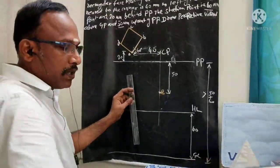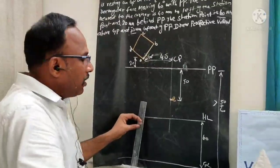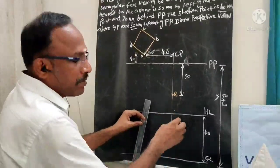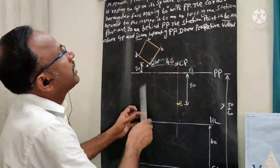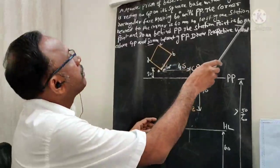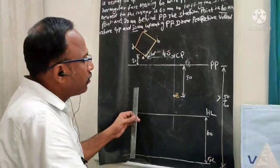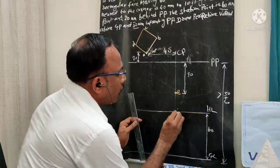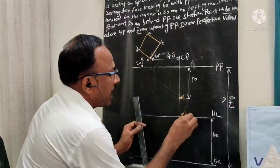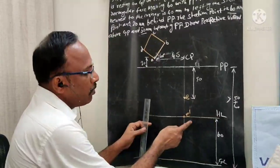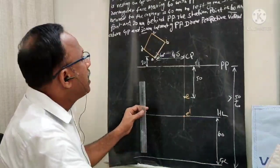After locating E, I am going to draw the E-dash point. The station point is 60 mm above GP, so on the same CP line, from GL I mark this point E-dash at 60 mm above the ground line.